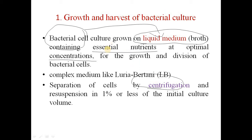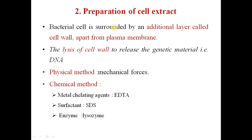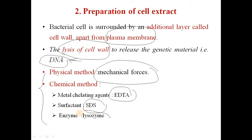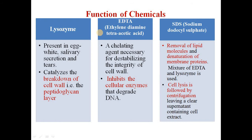In the next step, we have to prepare the cell extract. The bacterial cell is surrounded by an additional layer called the cell wall, along with a plasma membrane. The important step for DNA isolation is to lyse the cell wall so as to release the genetic material. There are two methods to isolate this DNA: one is a physical method carried out by mechanical force, whereas in chemical methods, chemicals like EDTA (a metal chelating agent), SDS (a surfactant), and lysozyme (an enzyme) are used.